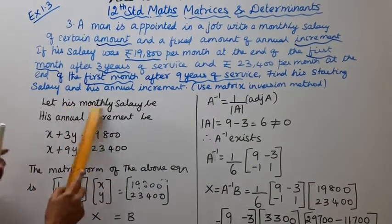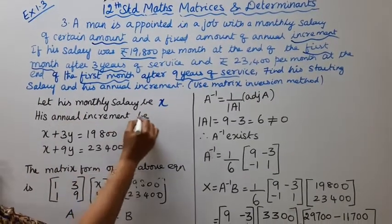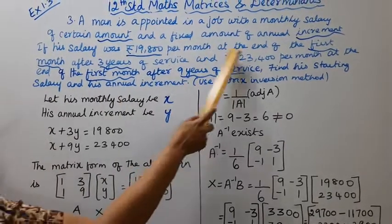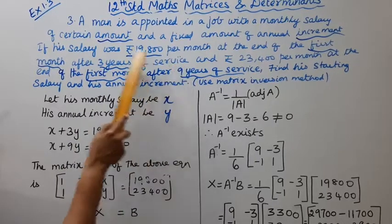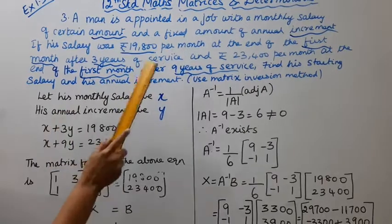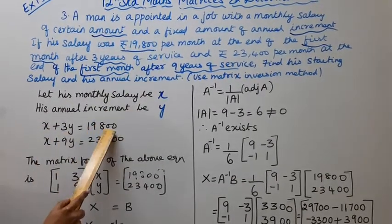Let his monthly salary be X and his annual increment be Y. At the end of the first month after 3 years of service is Rs. 19,800. So X plus 3Y equals 19,800.